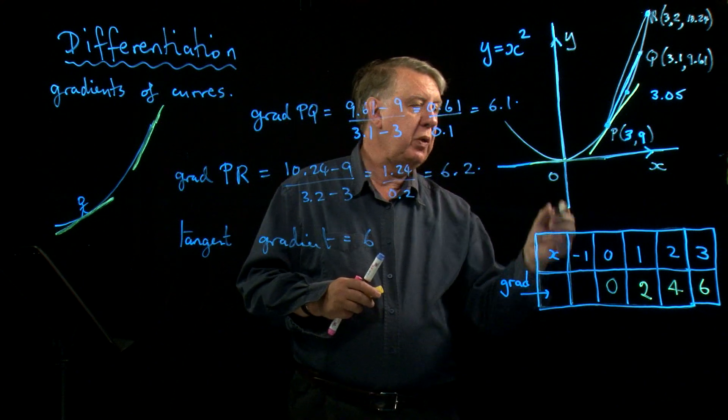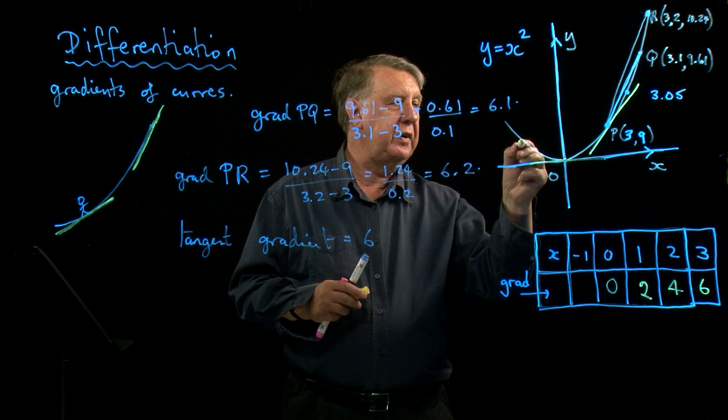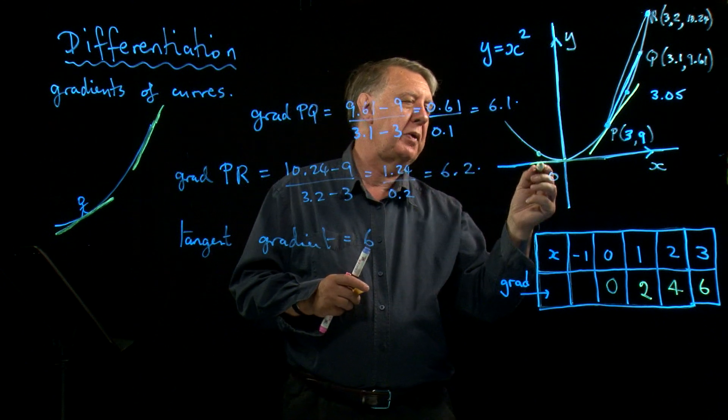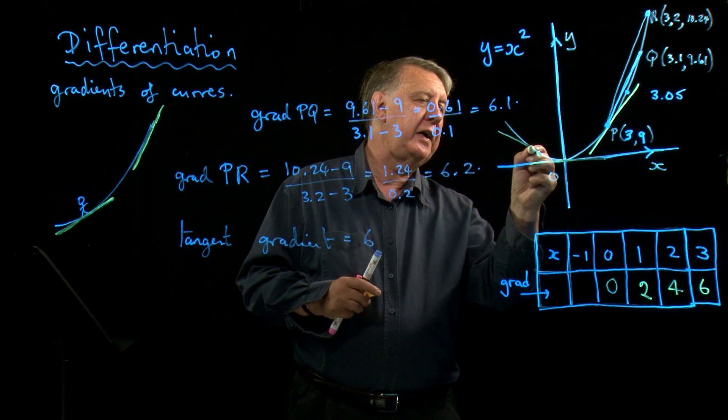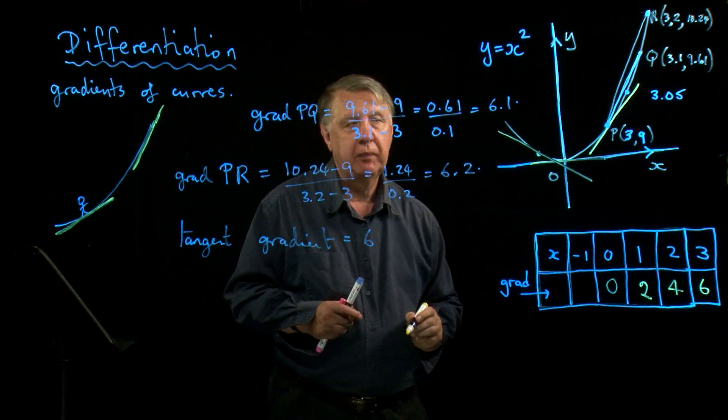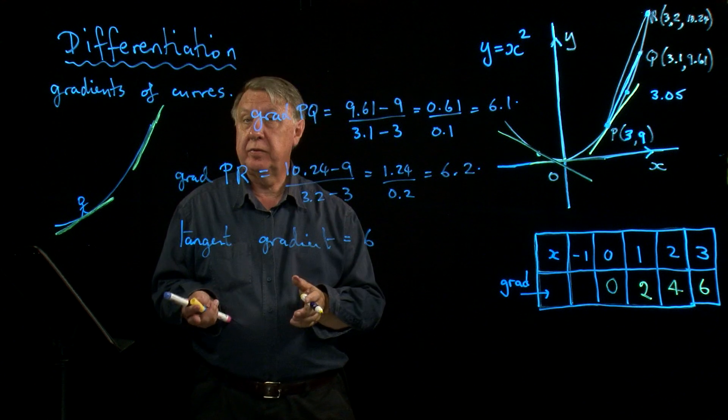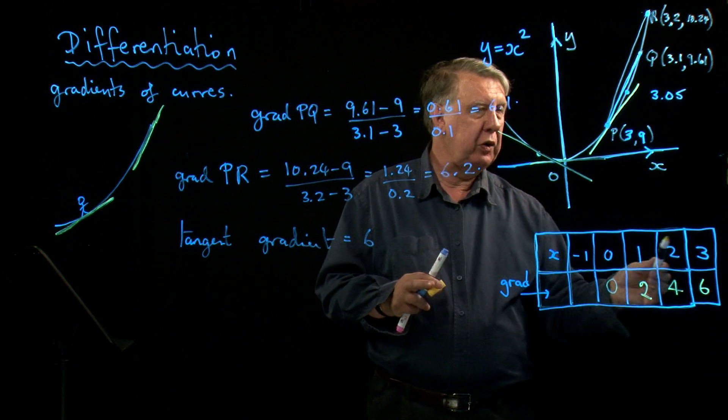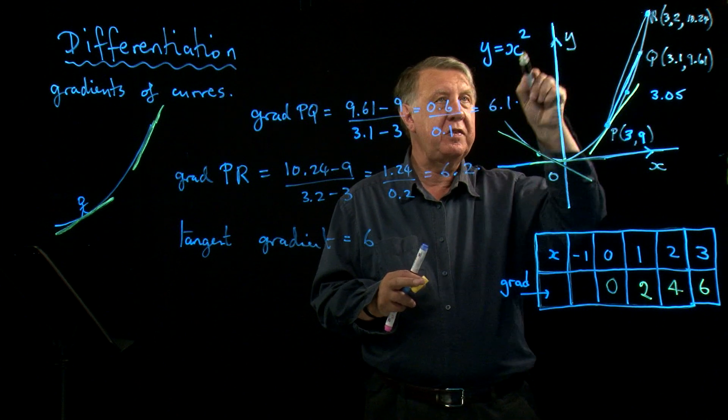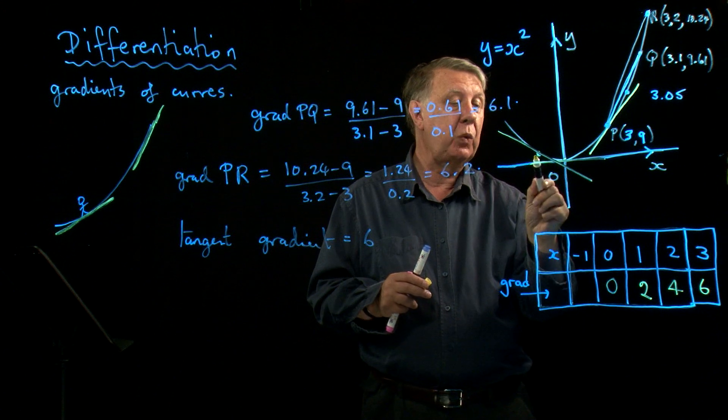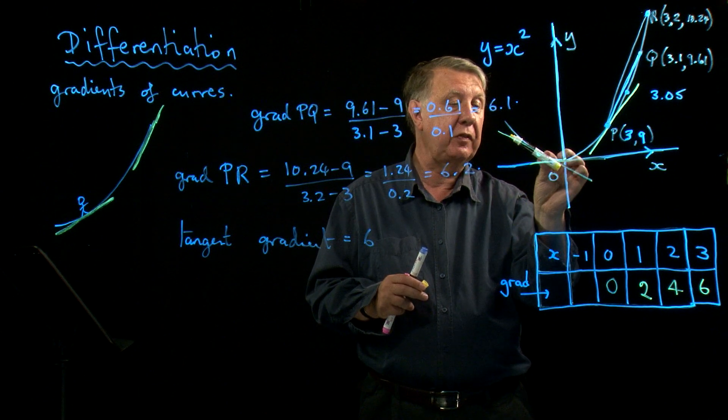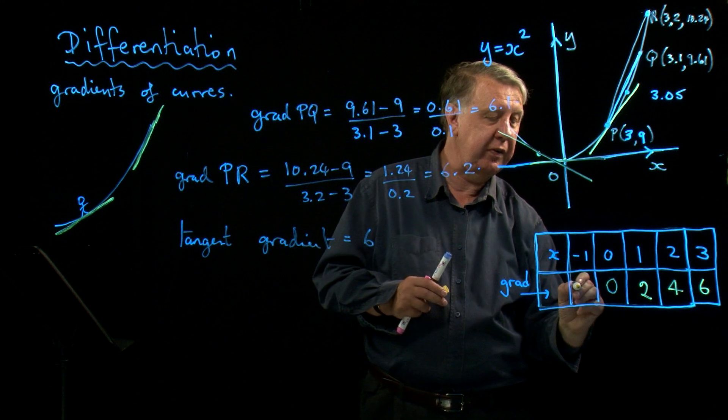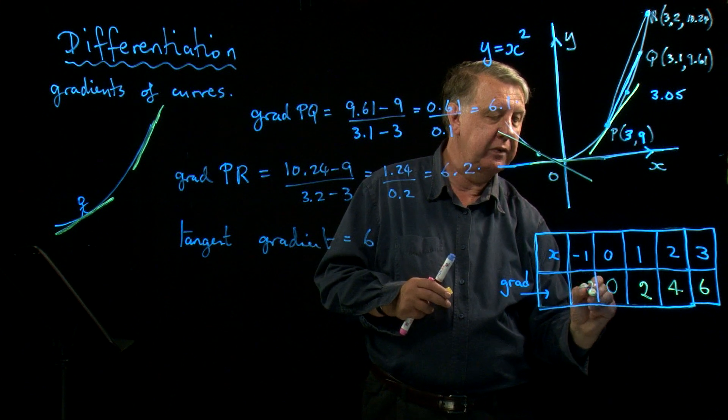Now what about x is negative 1? Well of course when I come around this side, negative 1, we haven't got the scale right but who cares, it doesn't matter. We can see that the line goes that way, so it's negative. Now if you really are following what's happening with this particular curve, this is a symmetrical curve, isn't it? So at negative 1, we're going to have exactly the same negative gradient as positive gradient on the other side, which was 2. So we're going to have here negative 2.